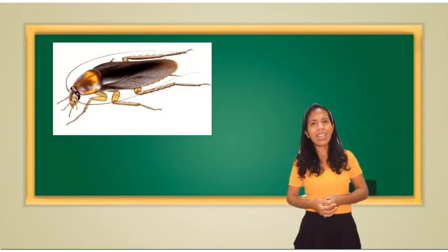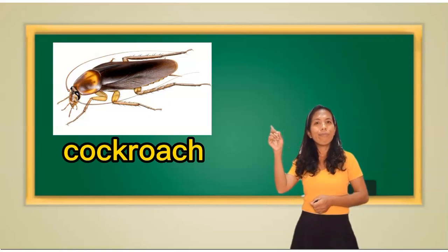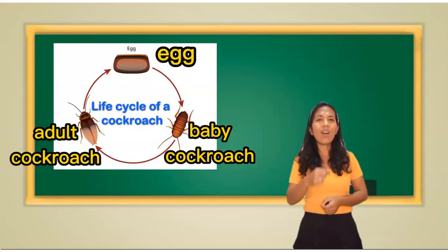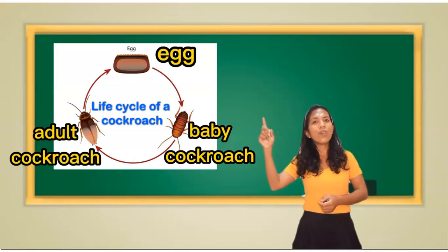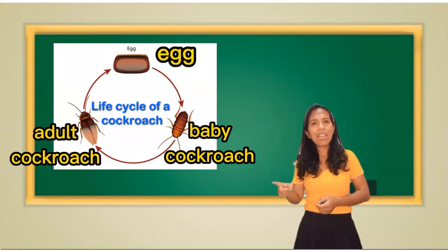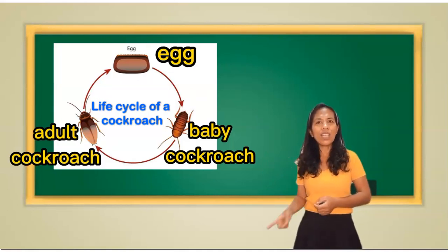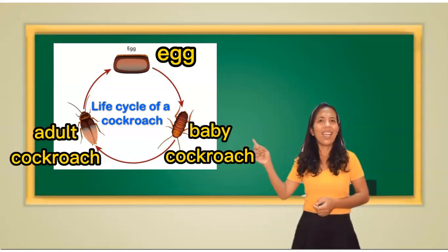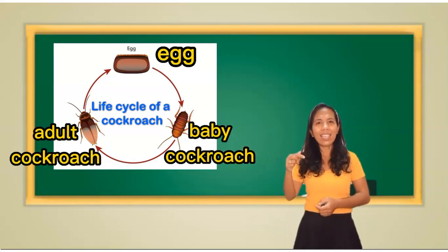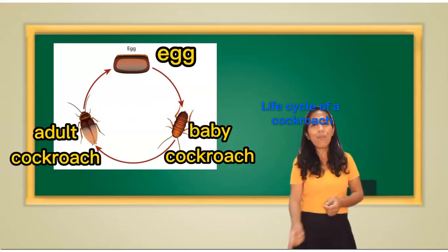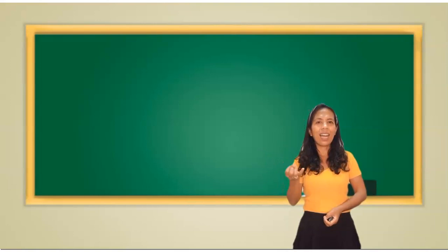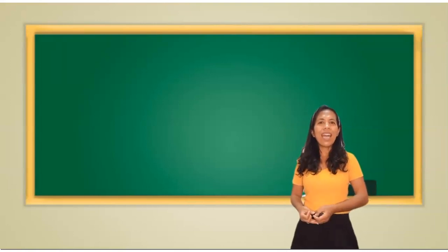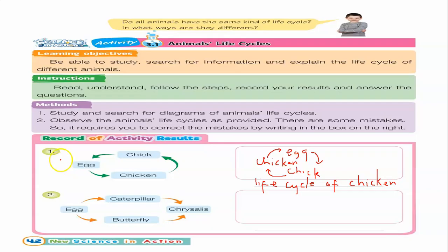What about the life cycle of a cockroach? It is also very easy. It starts from an egg, then it will turn into a baby cockroach. The baby cockroach will turn into an adult cockroach, and the adult cockroach will lay eggs. The cycle repeats and repeats. These are the life cycles of cockroach, grasshopper, and mosquito.